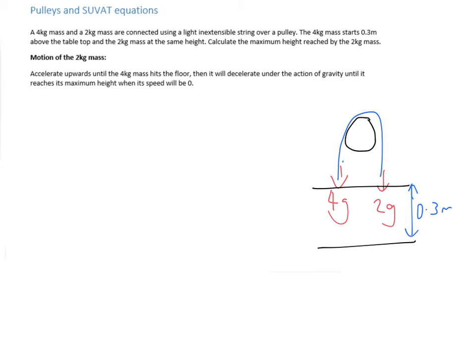You want to calculate the maximum height the 2kg mass reaches. It's starting here. We want to see how high it gets up here. So what's going to stop it getting higher? As this 2kg mass moves up, the 4kg mass is going to move down. Once it's moved 0.3 metres, it's going to hit the floor. When it hits the floor, this string is going to start to become slack.